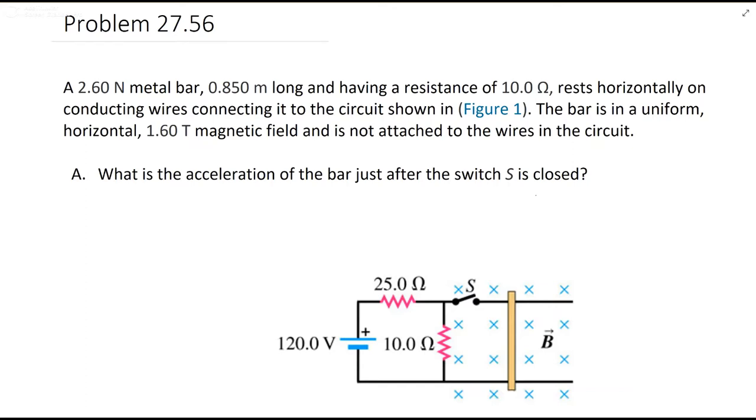Okay, this is problem 27.56. It gives you a circuit with a metal bar that has a resistance, two other resistors, and wants the acceleration of the bar after the switch is closed in a magnetic field.